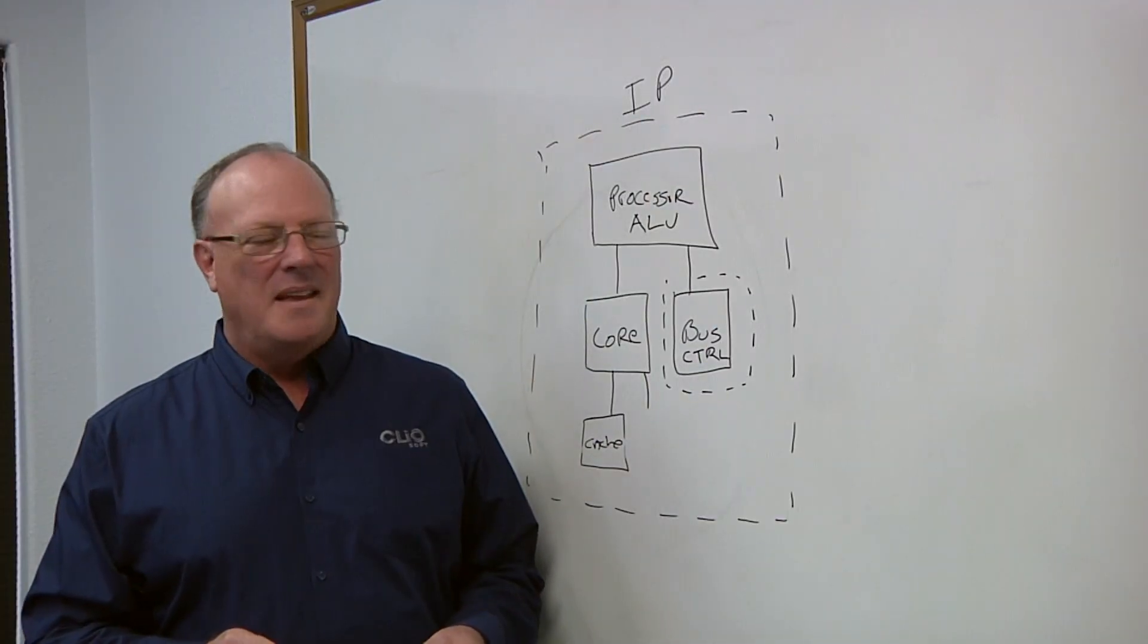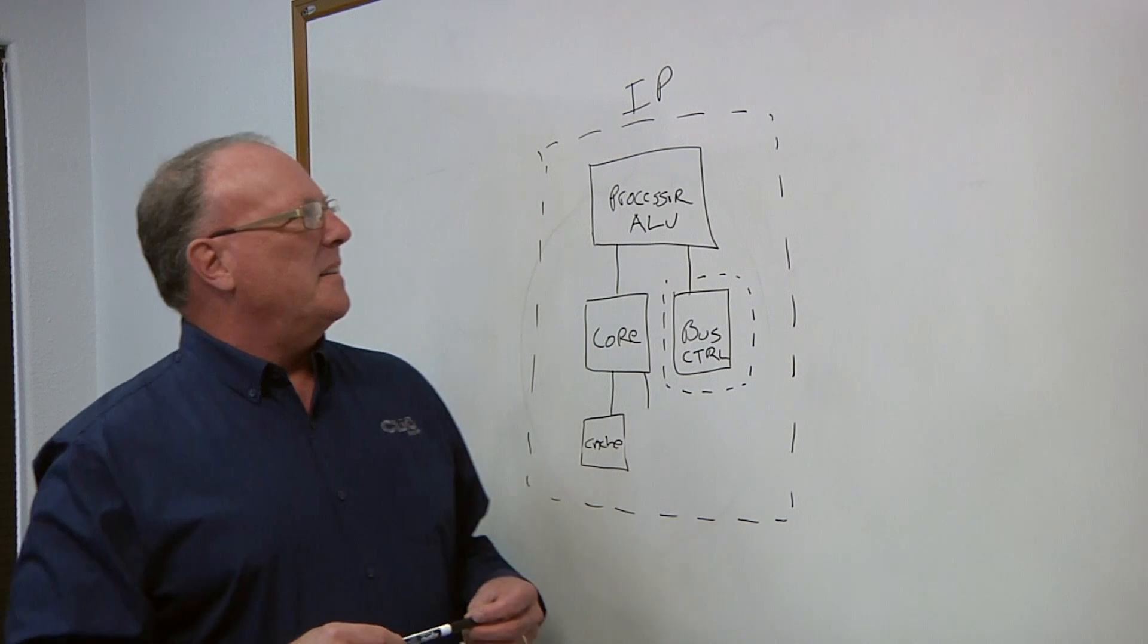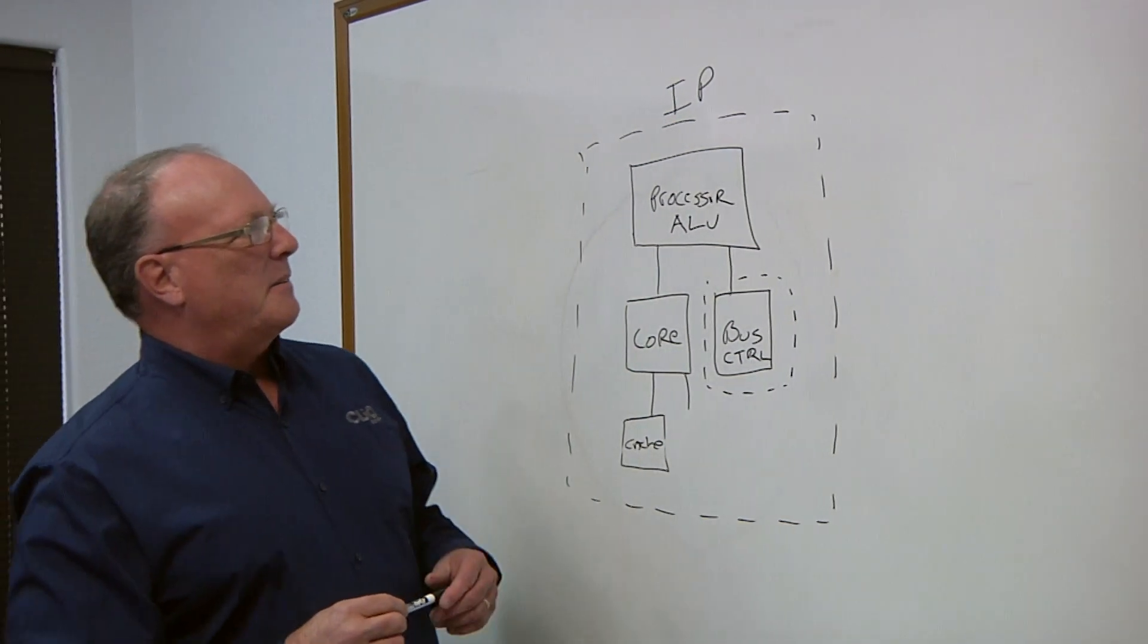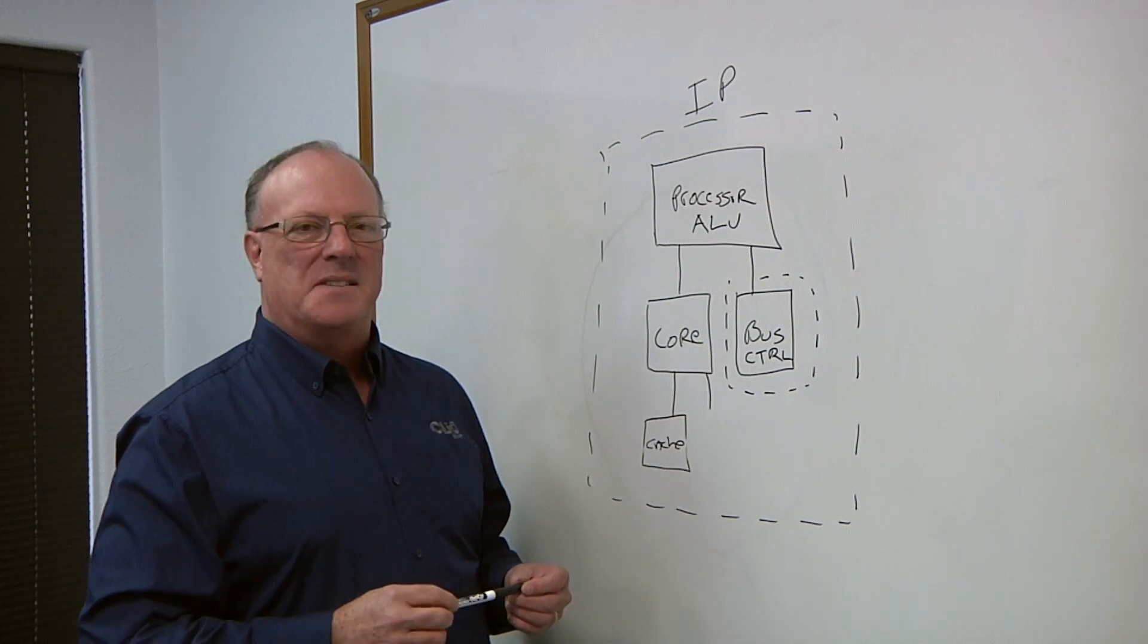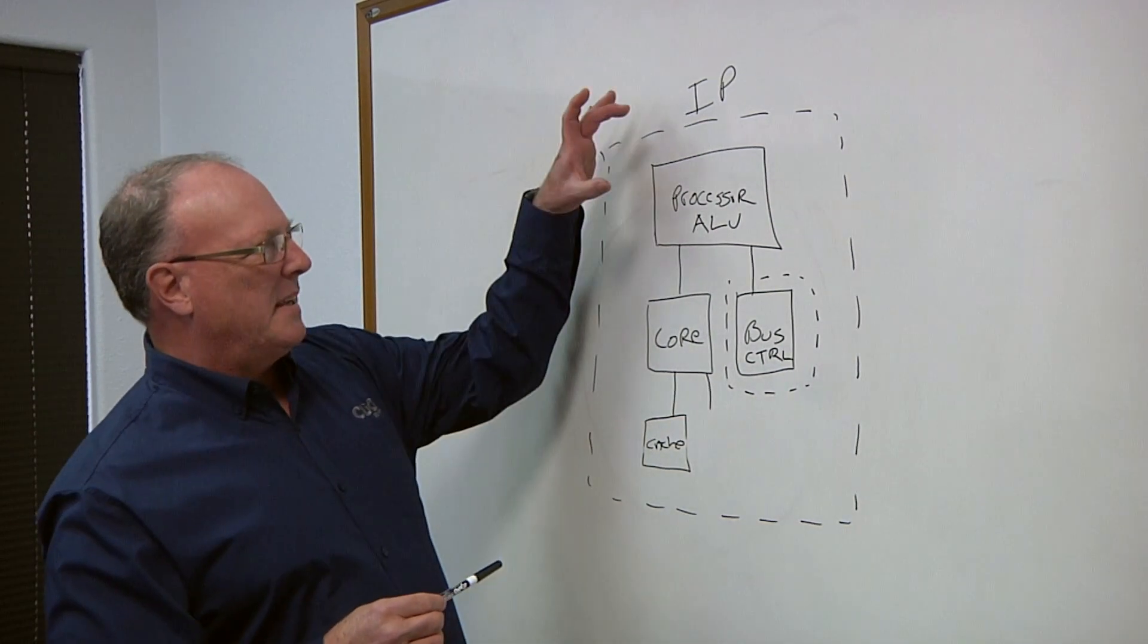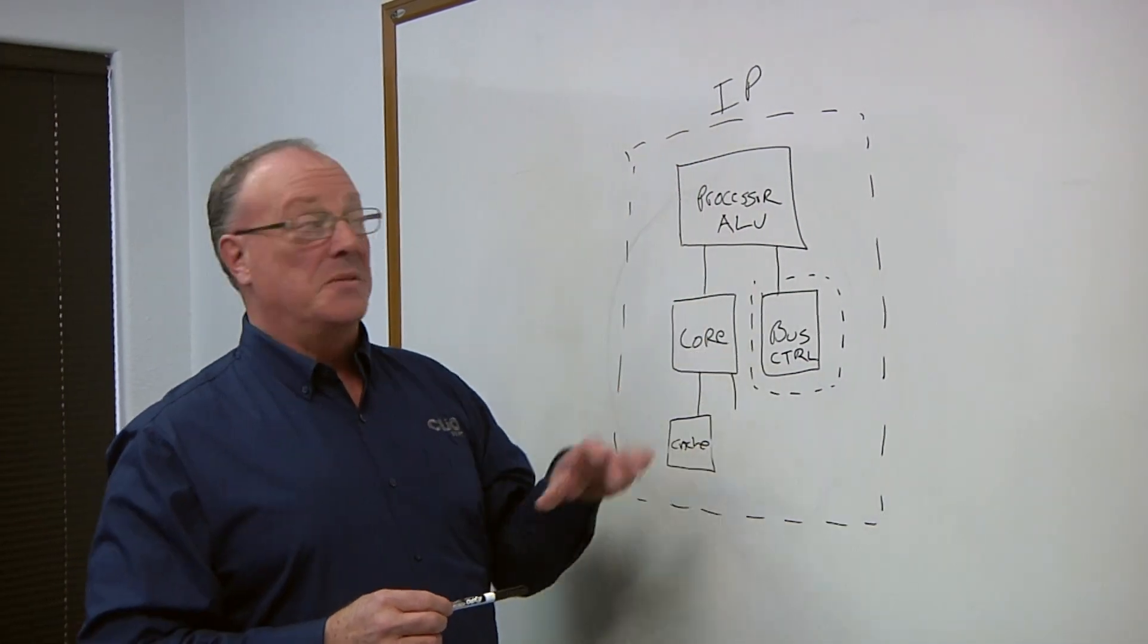So, why don't you draw this out for us? It's really that IP, particularly more complex IP, is made up of a lot of different pieces, and you need to know what IP you're using and what it in turn uses.